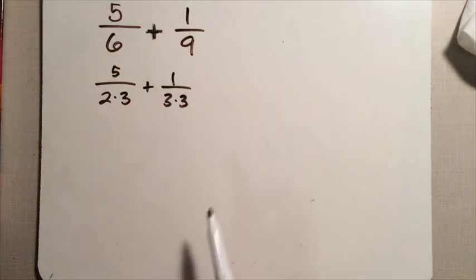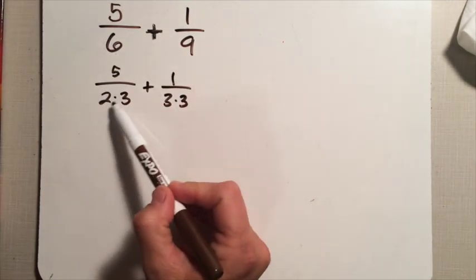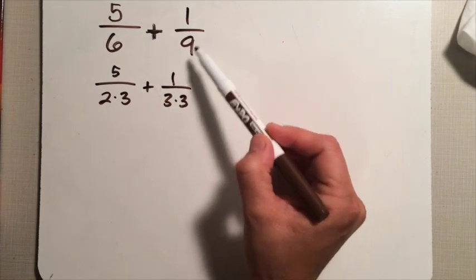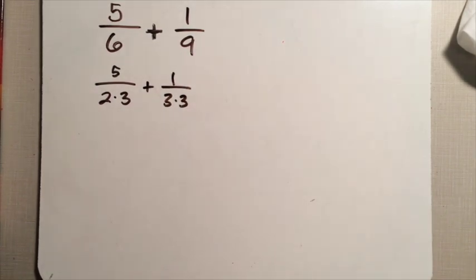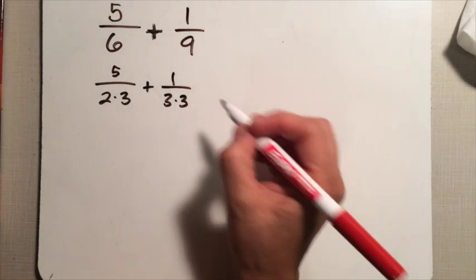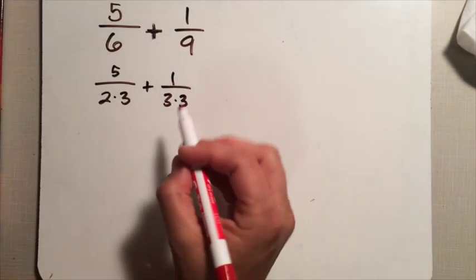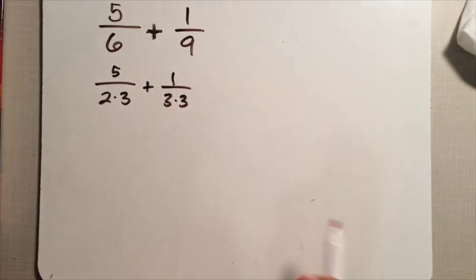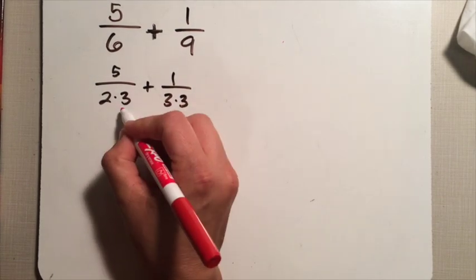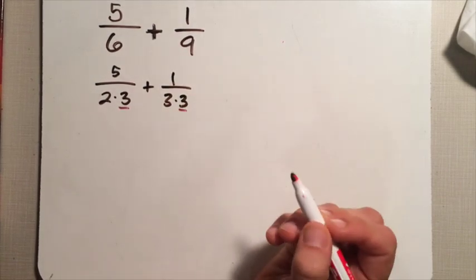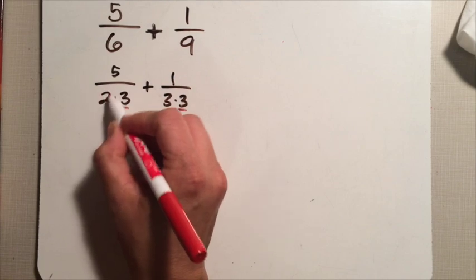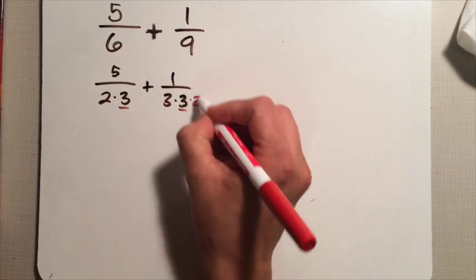If I get the prime factorization of six — two times three — and the prime factorization of nine — three times three — I can see what these two numbers have in common and what they need in order to become the smallest number with all the same factors: the least common multiple. They both have a factor of three, which is great. This one has a factor of two and this one doesn't.